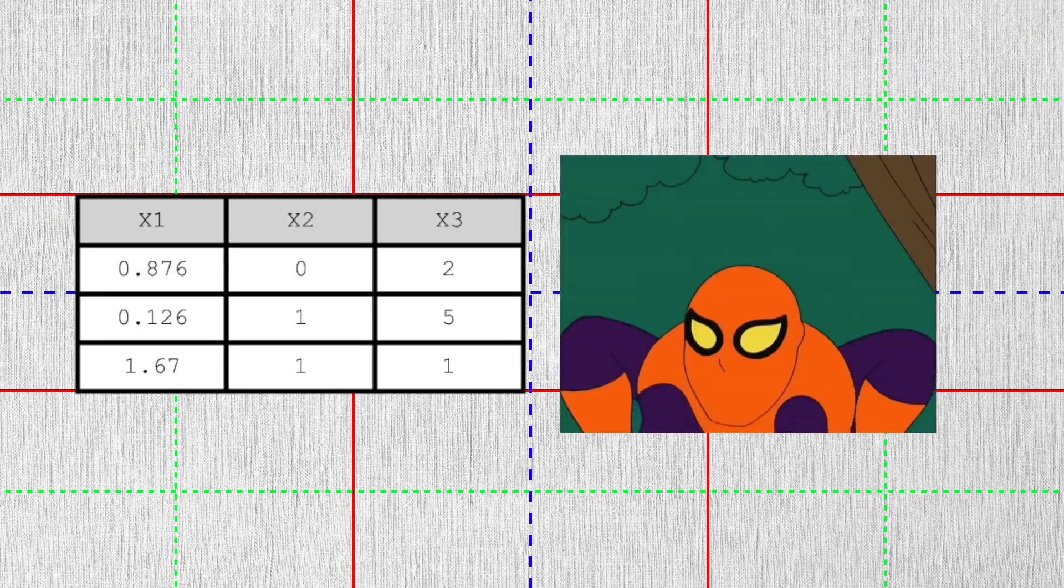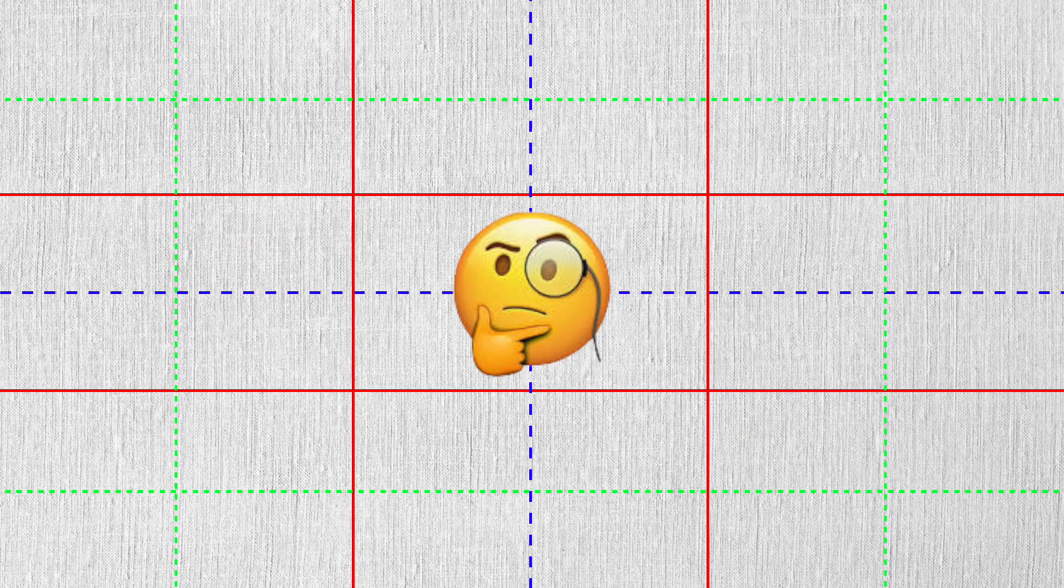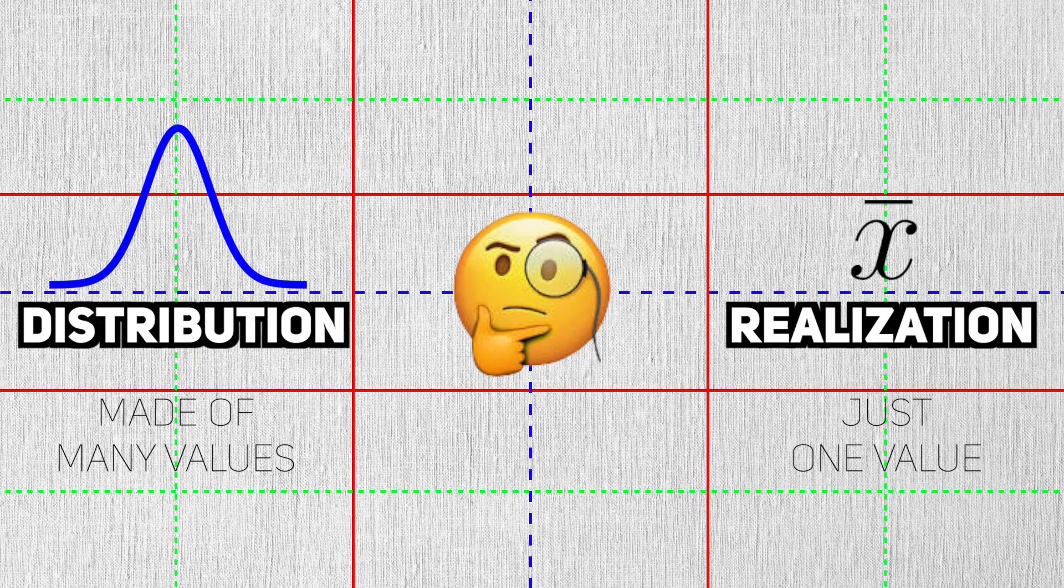This can be confusing because most of the time we only collect one dataset and therefore can only calculate one statistic. How could there be a distribution if we only have one statistic?